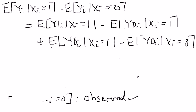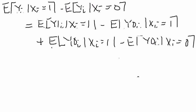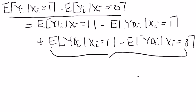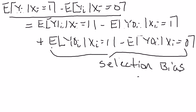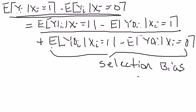The problem is we can't observe everything in here that we care about. The observed difference in means is equal to the average causal effect plus the selection bias term, and we can't observe the selection bias directly. For example, suppose we look at this difference and say it's $10,000 — the difference in starting salaries for econ majors and non-econ majors is $10,000. We can't say that's because these individuals majored in economics that they get a higher starting salary.